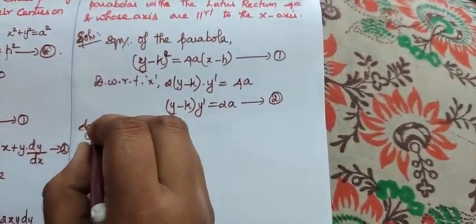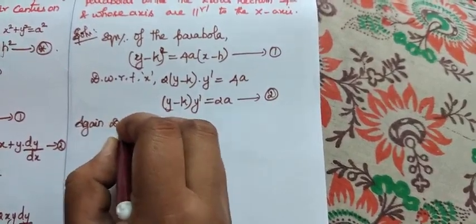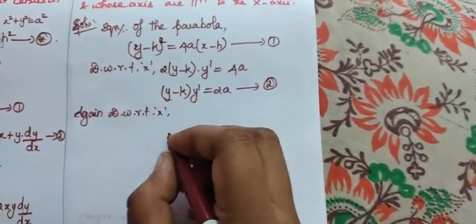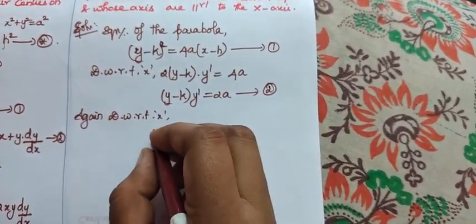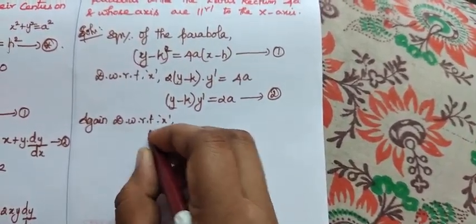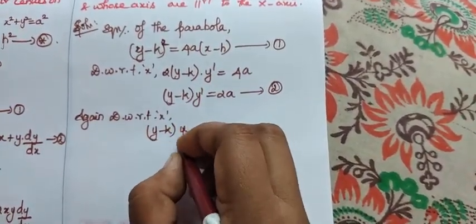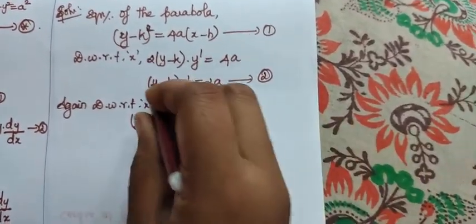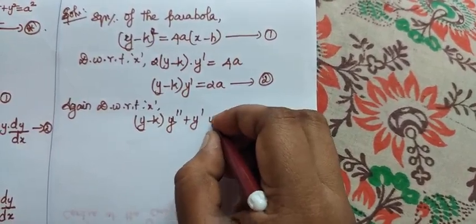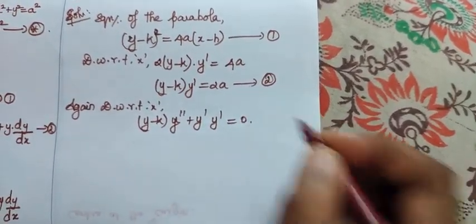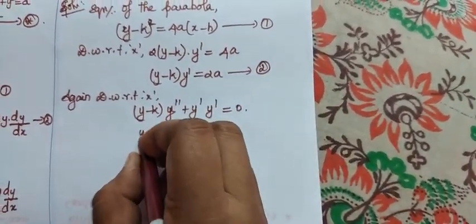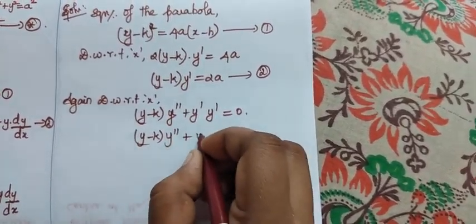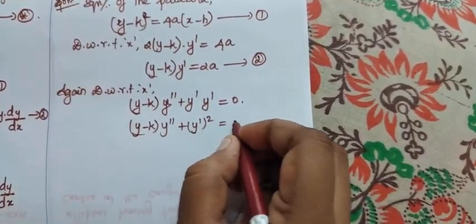Again differentiate with respect to x. Differentiate with respect to x. My answer is: keep (y - k) as such, differentiate y dash using uv method: y double dash plus differentiate, keep y dash as such, differentiation of (y - k) is y dash equal to 0. What is your answer? (y - k)y'' + (y')² = 0.